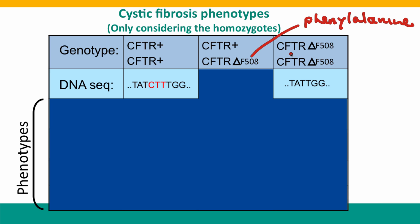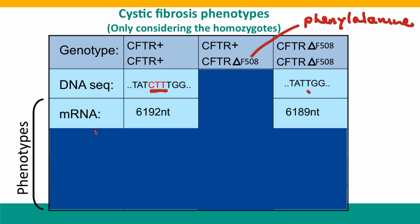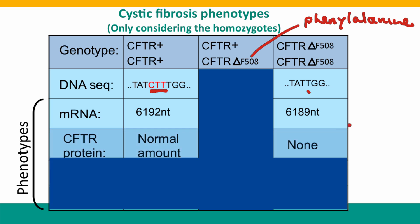So if we think about the homozygous genotypes and phenotypes: the genotype is the DNA sequence. Normal individuals have the three bases that code for the phenylalanine codon. Individuals who are homozygous for the mutation are missing those three bases. At the messenger RNA level, both kinds of people produce messenger RNA, but it's three nucleotides shorter in people with the mutation. At the protein level, there's suddenly a great big difference: normal individuals produce normal amounts of a normal protein, while individuals with the mutation produce no protein at all.